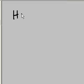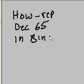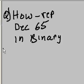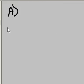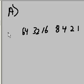The next question is: how do you represent decimal 65 in binary? That is a very important question. Here's our answer — we'll write down the weights in binary: 1, 2, 4, 8, 16, 32, 64, and 128.